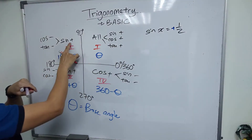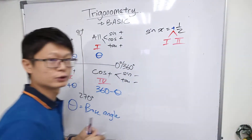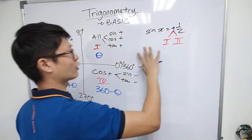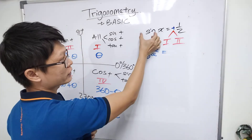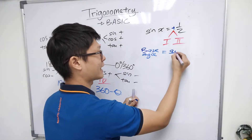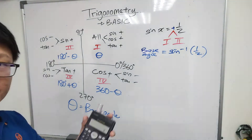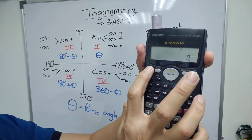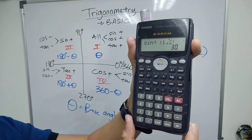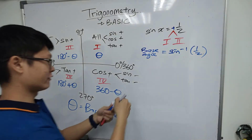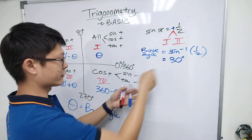Sine positive is at quadrant one and quadrant two. Then find the base angle — throw the sine over there. You get sine inverse, then press the calculator. Press Shift, then Sine, then one over two, press equal — you get 30 degrees. So 30 degrees is the base angle.